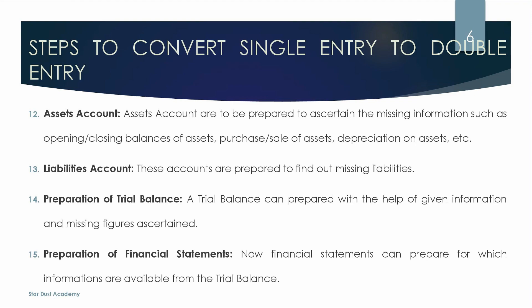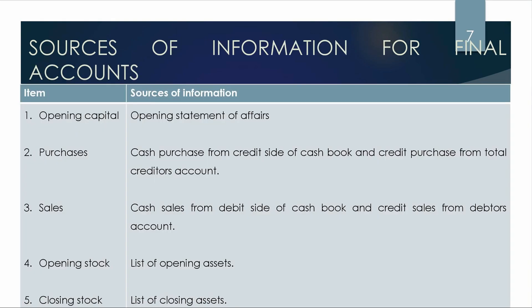Next — last step — basically we will prepare a financial statement. We will prepare a balance sheet and a trial balance. We have to prepare the maximum ledger accounts, missing figures, and trial balances. If we convert single entry into double entry, then we will get the maximum information in double entry principles. We will get the opening statement of affairs.